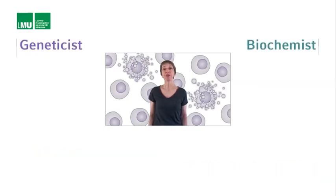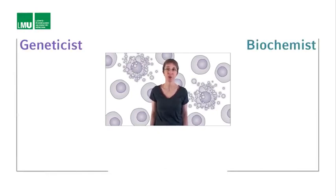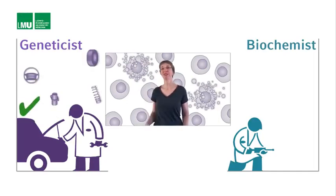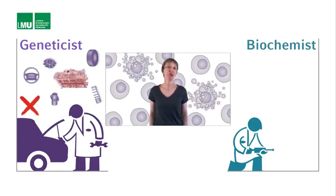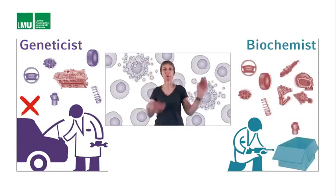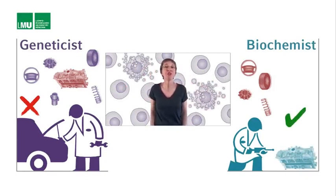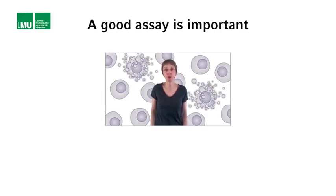I like the following comparison to demonstrate the differences between a genetic and a biochemical approach. Let's say a geneticist and a biochemist both want to find out what makes a car run. The geneticist would take out one part at a time and then try whether the car still starts — taking out a seat or the bumper would have no effect, but taking out the engine would. The biochemist would take the entire car apart into individual pieces, then find the minimal set of pieces that, when put together, provides something that can be started, such as an engine. What is as important for gene discovery using a biochemical approach, as it is for a genetic approach, is a good assay.